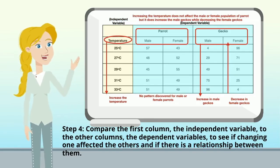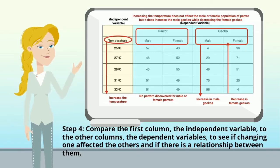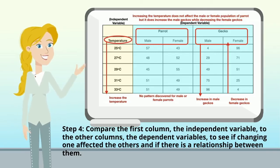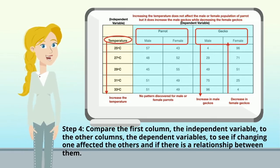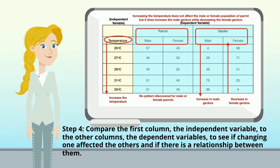In step four, we compare the first column — the independent variable — to the other columns — the dependent variables — to see if changing one affected the others and if there's a relationship between them. As we can see, increasing the temperature doesn't make much difference for the parrots. However, with the geckos, increasing the temperature increases the number of male geckos and decreases the number of female geckos.